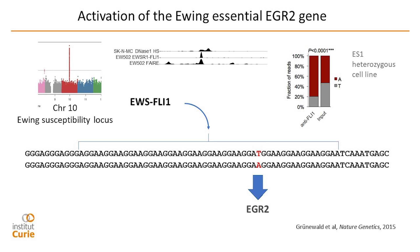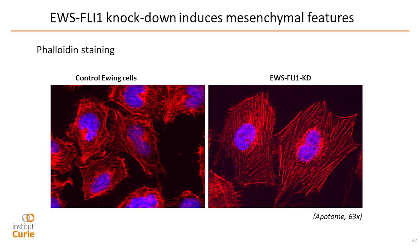One longstanding question in Ewing sarcoma is: what is the cell of origin? An important observation made soon after characterization was that if you inhibit EWS-FLI1, you completely change the cytoskeleton of the cells. Ewing cells have a quite disorganized actin cytoskeleton, and when you inhibit EWS-FLI1, you get a much more organized cytoskeleton. This profile is what is observed in mesenchymal cells, leading to the idea that if you inhibit EWS-FLI1, the cells may go back to the initial state of their cell of origin.